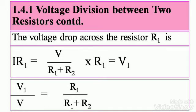The voltage drop across the resistor R1 is I R1. Because we know that by Ohm's law, V equals I R. So the voltage is I R1 equals V divided by R1 plus R2, that is I, whole thing into R1, that is V1. We take that as V1.